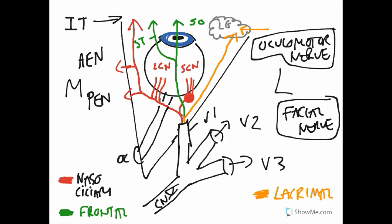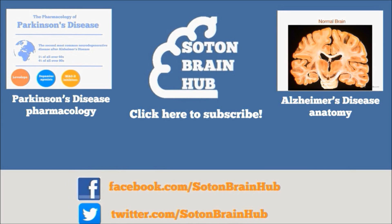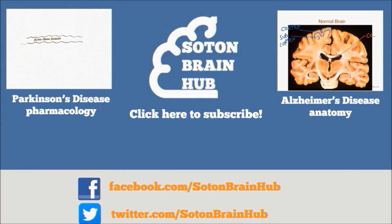Sympathetic fibers enter the head by traveling with the internal carotid artery as a plexus around the artery, then distribute themselves through trigeminal nerve fibers to innervate structures with sympathetic fibers. All sympathetic fibers inside the head are postganglionic, whereas parasympathetic fibers inside the head can be either preganglionic or postganglionic.